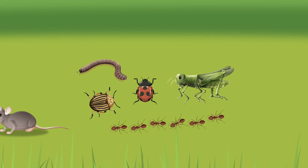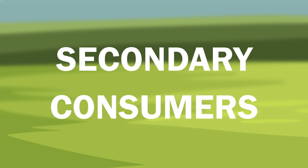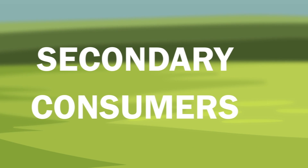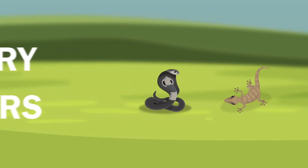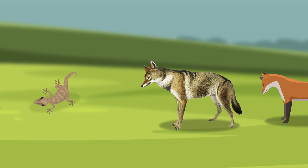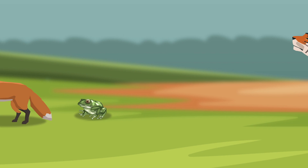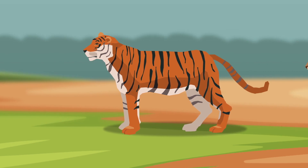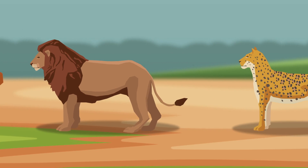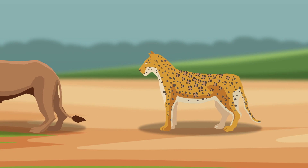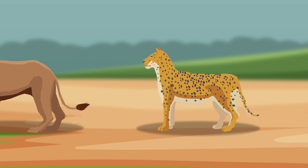Secondary consumers are the carnivorous animals such as snakes, lizards, jackals, foxes, and frogs, and big carnivores like tiger, lion, and panther. These animals use the grasslands for hunting purposes and feed on the primary consumers.